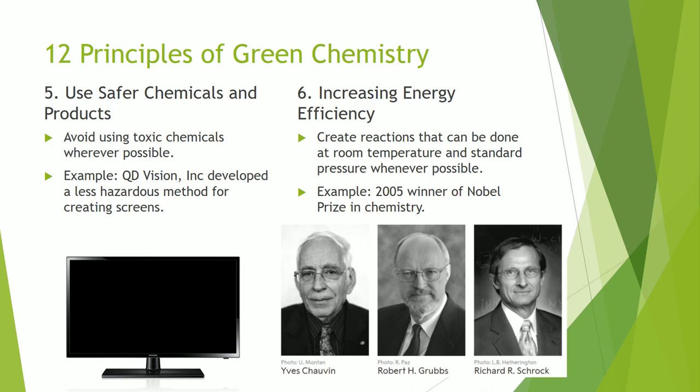Number six: increasing energy efficiency. Create reactions that can be done at room temperature and pressure. Standard room temperature is around 20 to 25 degrees Celsius or 68 to 77 degrees Fahrenheit. Standard room pressure is about one atmosphere or around 101 kilopascals. For this example, in 2005, the Nobel Prize in Chemistry was awarded to Yves Chauvin, Robert H. Grubbs, and Richard R. Schrock for their work into a new type of reaction called metathesis that can be carried out at room temperature and pressure.